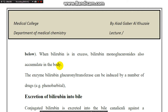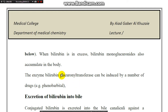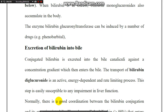في حالة وجود زيادة في البليروبين أو عدم طرحه بشكل طبيعي، يصير تراكم هذه المادة في الجسم. غياب أو نقص أنزيم البليروبين كلوكورونات ترانسفيريز يؤدي إلى عدم اكتمال عملية ربط البليروبين بالكلوكورونات، مما يسبب تراكم البليروبين الإنديركت في الجسم.